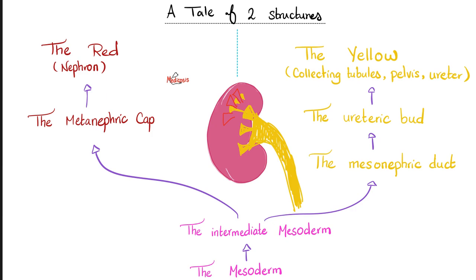How about the kidney? Embryologically speaking, the kidney is in the middle — not on the inside like the endothelium lining your stomach, and not on the outside like the epidermis. It's a mesodermal structure — specifically, the intermediate mesoderm. The intermediate mesoderm gives us two separate structures: the metanephric cap, which gives you the nephron (shown in red), and the mesonephric duct, which gives the ureteric bud, which becomes the ureter, then the renal pelvis, and then the collecting tubules (shown in yellow).